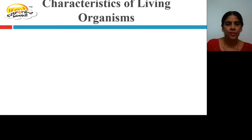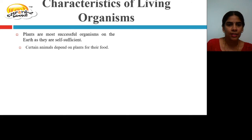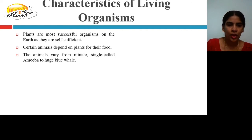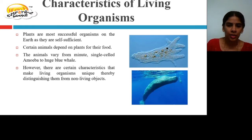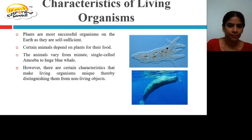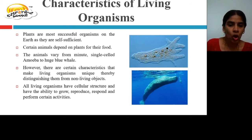Characteristics of Living Organisms. Plants are the most successful organisms on earth as they are self-sufficient. Certain animals depend on plants for their food. Animals vary from minute single-celled unicellular amoeba to the huge blue whale. However, there are certain characteristics that make living organisms unique and distinguish them from non-living objects. All living organisms have cellular structure and the ability to grow, reproduce, respond, and perform certain activities which non-living objects cannot do.